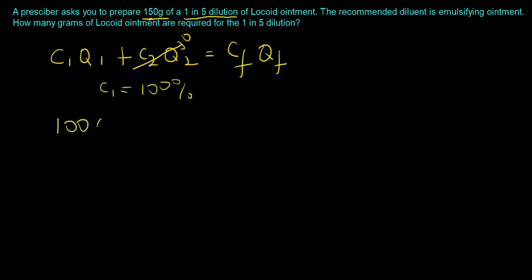So you have 100 times Q1 being equal to Cf times your Qf. We know that Qf is 150 grams. The Cf is a 1 in 5 dilution, so it's basically 1/5 times 100. You have 1/5 times 100, all of that times 150 grams. This will give you 150 divided by 5, which gives you 30. So your Q1 is going to be 30 grams.